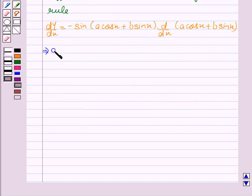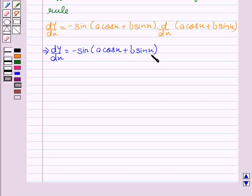This implies dy by dx equal to minus sin(a cos x + b sin x) into minus a sin x plus b cos x.